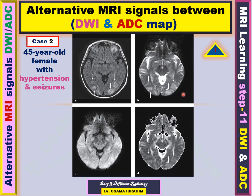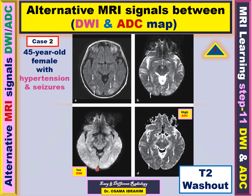This is the diffusion-weighted image sequence, and this is the ADC. The signal appeared high in ADC in the bilateral occipital lobe, and also appeared iso-signal in the diffusion-weighted image — slightly high but not as high as the ADC. ADC signal is higher than in the diffusion-weighted image. When iso in diffusion and high in ADC, this is called T2 washout, which represents edema.